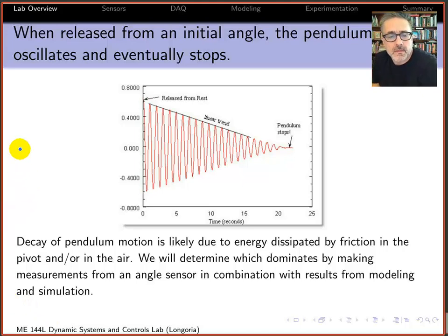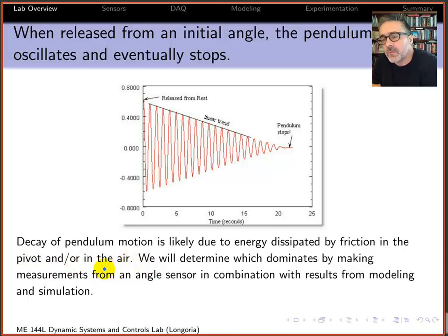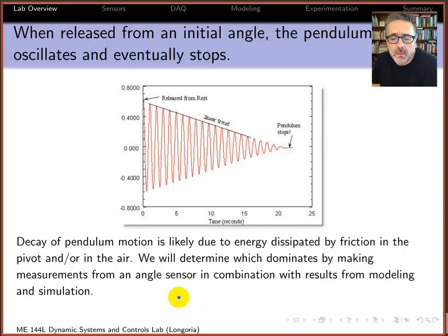The nice thing about this setup is we really know what to expect. A typical experiment will release this pendulum from rest and it will oscillate until it stops — for this data it only took about 20 seconds. The decay indicates that the energy initially stored in the system is being dissipated by friction, either in the bearings and pivot, the attachment to the sensor, or perhaps due to air drag. We'll try to determine which of these processes is dominant in a follow-up lab focused more on modeling.